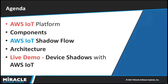Moving on to the agenda: I'll talk about AWS IoT Platform, then the components associated with it, then AWS IoT Shadow Flow and how AWS IoT Shadow Services work in real-time. Then I'll show an end-to-end architecture, followed by a complete live demonstration on connecting a Raspberry Pi to AWS IoT Platform using device shadow concepts.